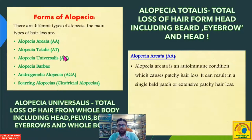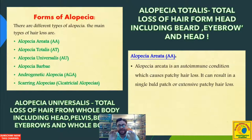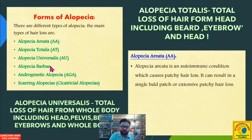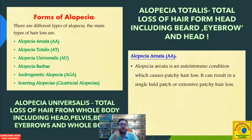Alopecia universalis means total loss of hair from the entire body. The patient of alopecia universalis does not have any hair on any part of the body — they lose axillary hair, chest hair, pubic hair, hairs on the hands and feet, and everywhere. There is also alopecia barbae, which is loss of hair in small patches from the beard, a type many practitioners see commonly.